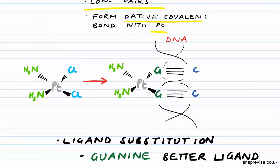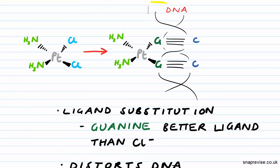If we have a look at the cisplatin diagram, you can see what's happening. Here's our cisplatin complex, and it forms those bonds with the DNA — with the guanine, these G nucleotides — and it's actually a ligand substitution reaction. You can see that the guanine is being substituted for the chloride ligands, because guanine is a better ligand than chloride.